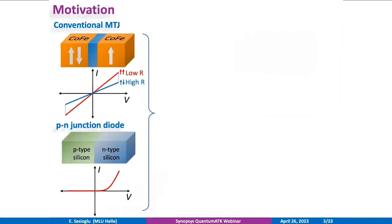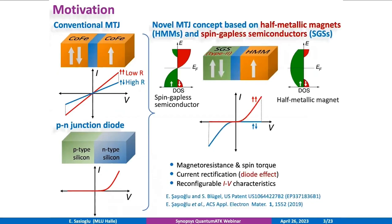The question is: is it possible to bring together the unique properties of conventional magnetic tunnel junctions and semiconductor PN junction diodes to form a single, unified device? A few years ago, we proposed a new magnetic tunnel junction concept based on half-metallic magnets and spin-gapless semiconductors. This novel concept combines the properties of conventional magnetic tunnel junctions and PN junction diodes and is capable of presenting not only a magnetoresistance effect, but also current rectification.